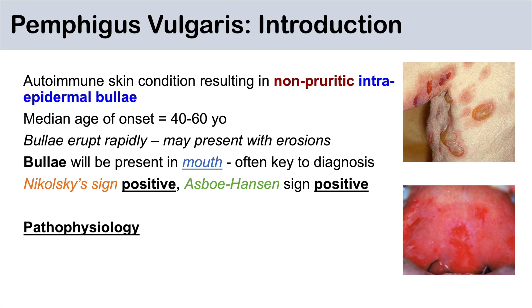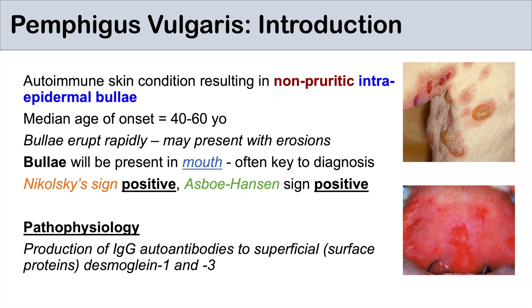The reason why these signs are positive, why the bullae erupt rapidly, and why the bullae are flaccid is all to do with the pathophysiology of pemphigus vulgaris. It involves production of IgG autoantibodies to superficial surface proteins, desmoglein 1 and 3. This targets the very superficial skin layer, which is why the outside of the bullae is so weak — explaining the positive Nikolsky and Asboe-Hansen signs.